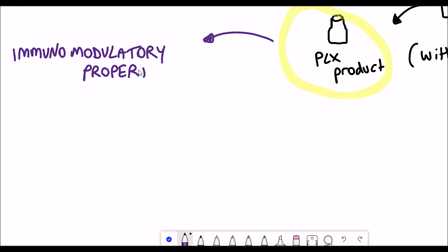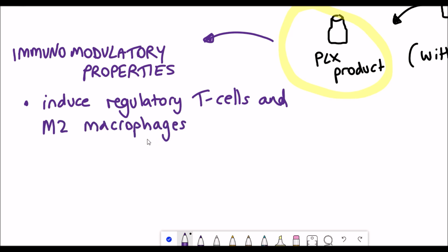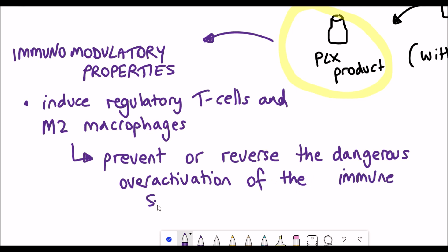Similarly to Athersys, they have data showing these cells have immunomodulatory properties such that they can induce regulatory T cells and M2 macrophages. The bottom line is that hopefully it can prevent or reverse the dangerous over-activation of the immune system seen in severe cases of COVID-19. The key difference between this product and Athersys is instead of being intravenously injected, these cells are provided intramuscularly.